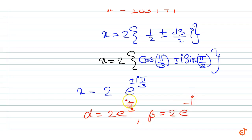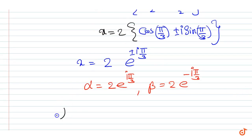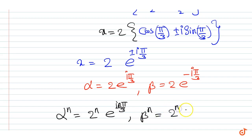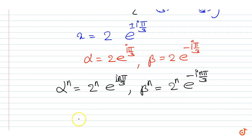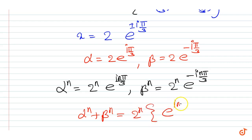Then alpha to the power n equals 2ⁿ · e^(inπ/3), and beta to the power n equals 2ⁿ · e^(-inπ/3). Now alpha to the power n plus beta to the power n equals 2ⁿ · (e^(inπ/3) + e^(-inπ/3)).